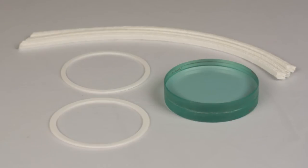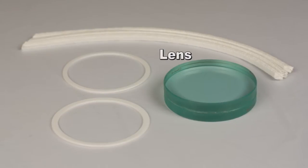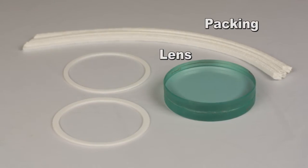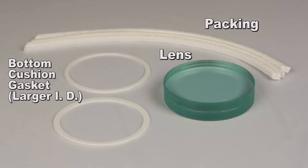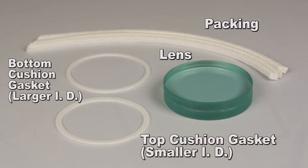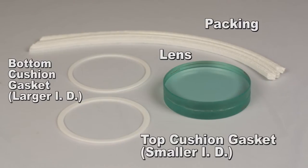The Model B Weld Unit with Bolted Cap or Replacement Kit consists of the lens, the packing, and two gaskets. The bottom cushion gasket, which has the larger interior diameter, and the top cushion gasket, which has the smaller interior diameter. The interior of the unit body must be clean.